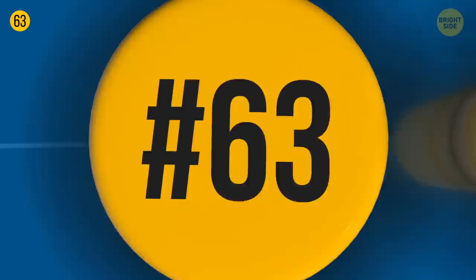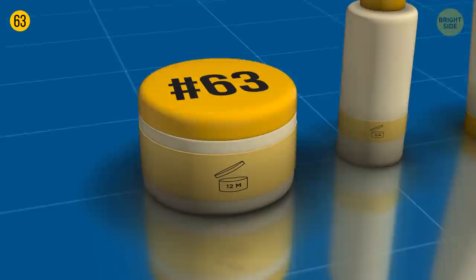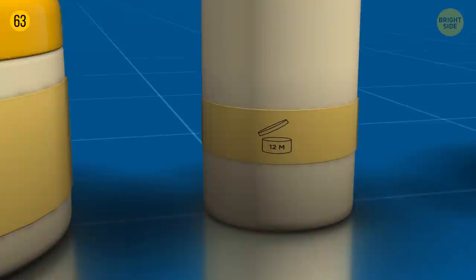There's a number put on the side of many cosmetic products. It isn't picked randomly. It tells you how long your product will last after you've opened it. Here's why it has an open jar for a graphic symbol.